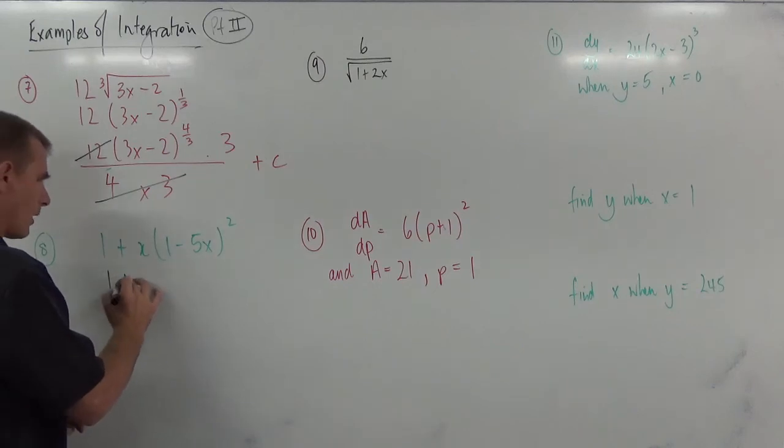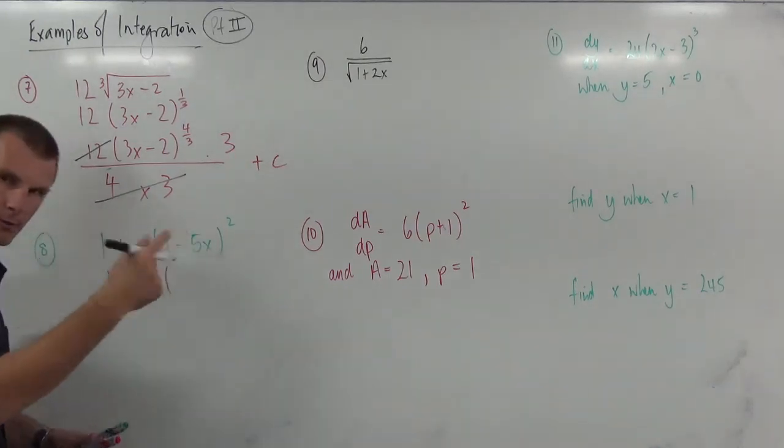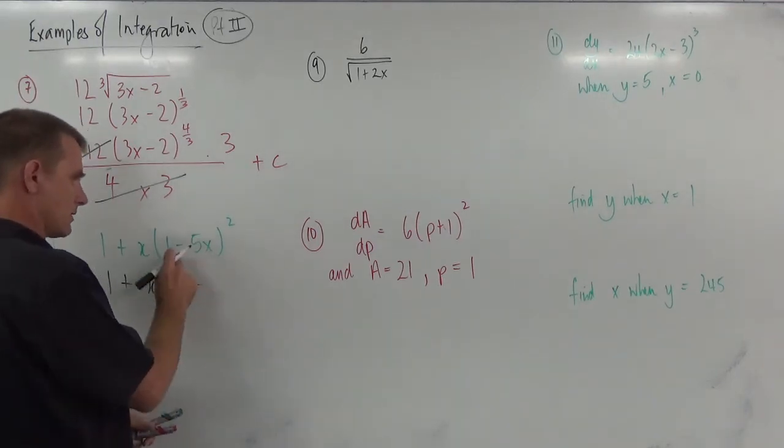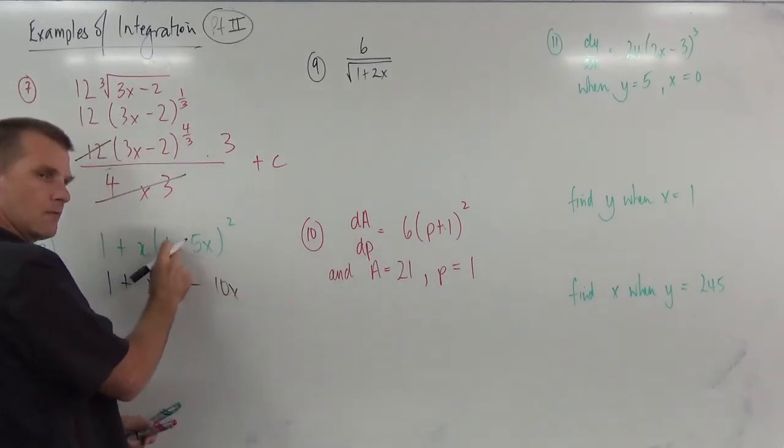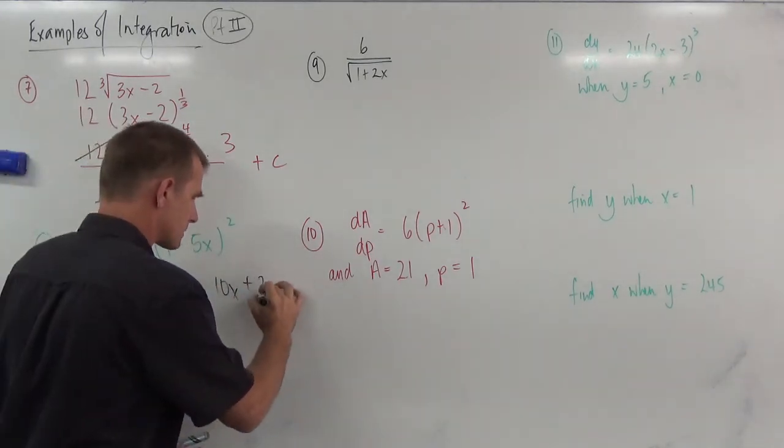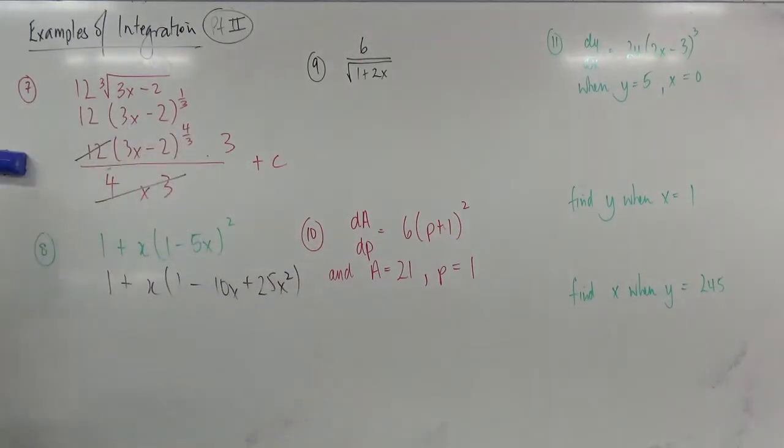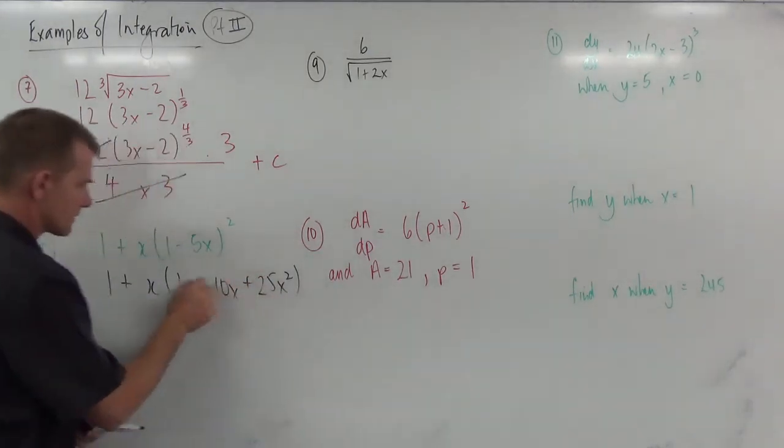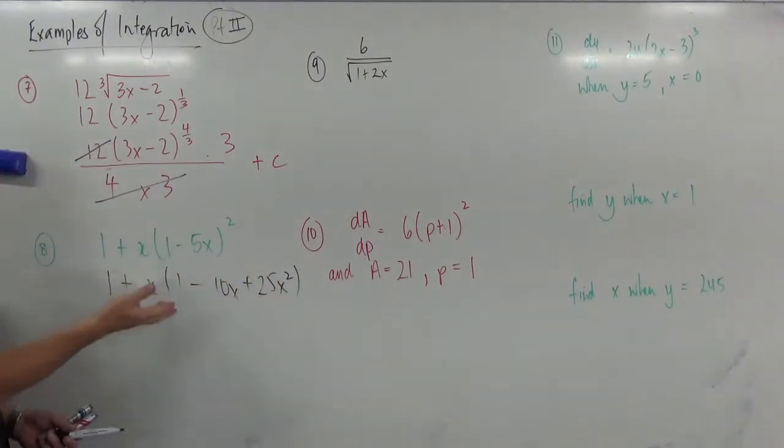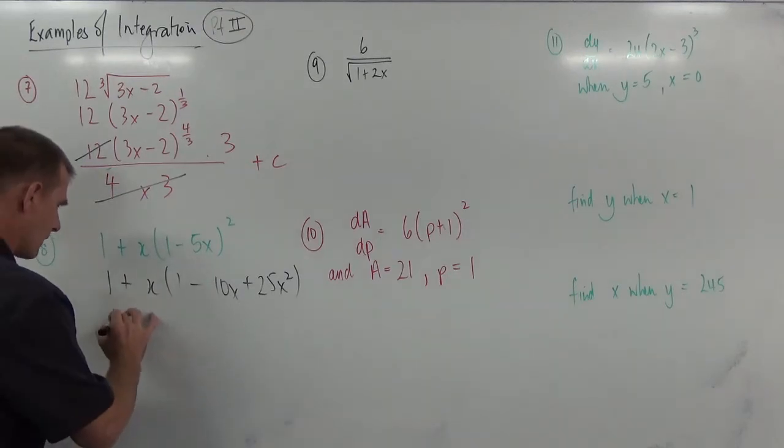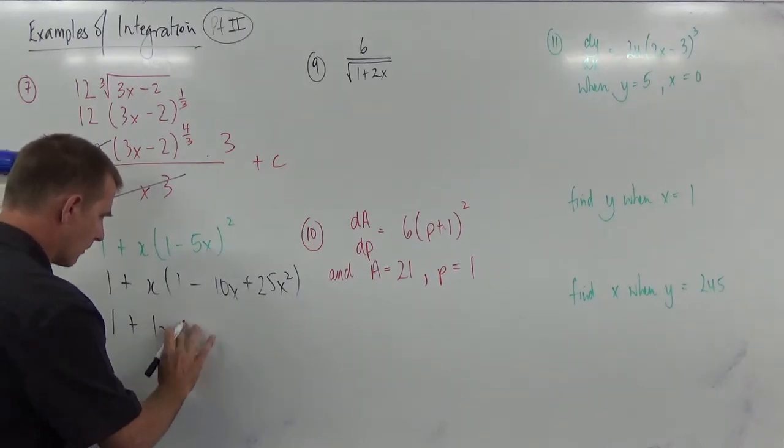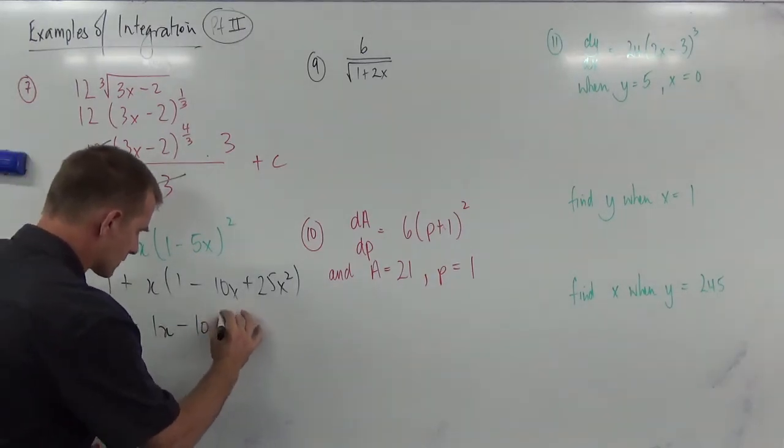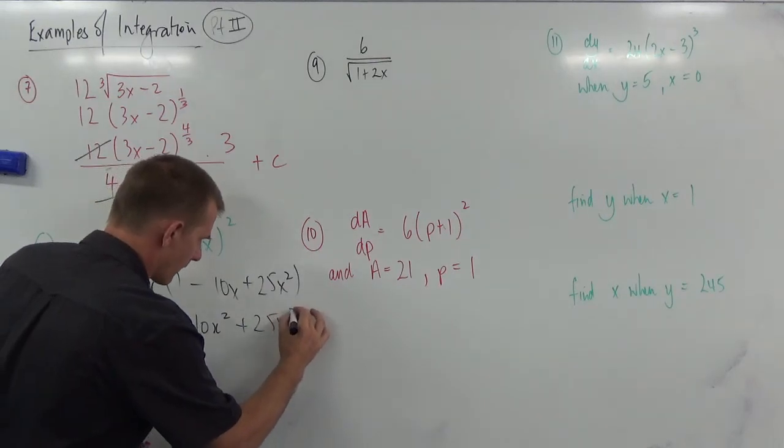So this would become 1 plus, I'll leave the x there for a moment, binomial. You should multiply these out real easy. 1 minus. Multiply the 2, double it. Square that one. Don't forget about the negative. Plus 25x squared. Now, still we couldn't do our tricky thing because the derivative of this is not here anyway. So it wouldn't work.